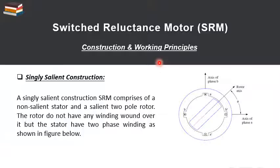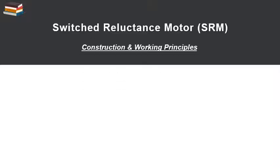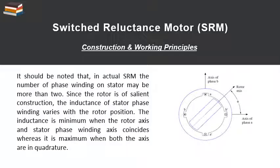In the singly salient construction, the rotor does not have any winding on it, but the stator has two-phase winding as shown in the figure. It should be noted that in the actual switched reluctance motor, the number of phase windings on the stator may be more than two. Since the rotor is of salient construction, the inductance of the stator phase winding varies with the rotor position.